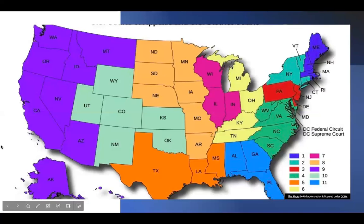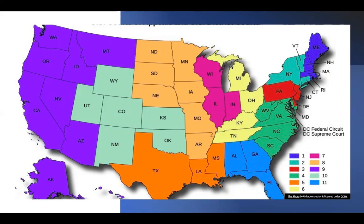This is a map of these circuits. There are 11 circuits. We are in the Ninth Circuit, which covers California, Arizona, Nevada, Idaho, Montana, Washington, Oregon, Alaska, and Hawaii. Consider why they're shaped this way — is it based on the beliefs of the people in that part of the country, or is it simply because of geography?